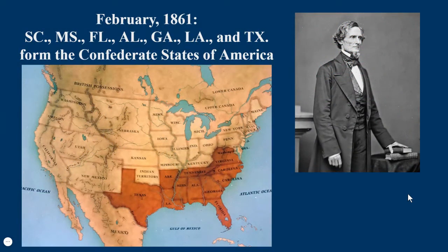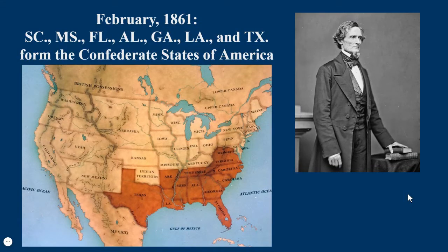A lot of the secession declarations refer to slavery as a 'domestic institution' or the 'peculiar institution.' By February of 1861, South Carolina, Mississippi, Florida, Alabama, Georgia, Louisiana, and Texas have seceded, stating in no uncertain terms it is because of slavery. The argument that this was a states' rights issue is a post-war, Reconstruction-era argument — none of them in 1860 and 1861 were making that argument. They come together in 1861 to form the Confederate States of America.